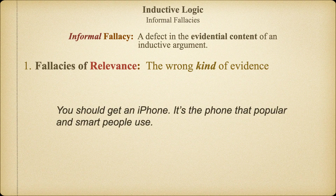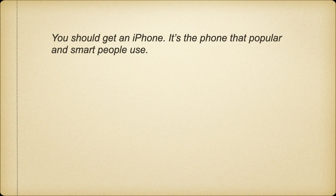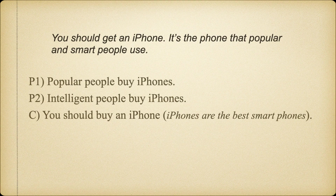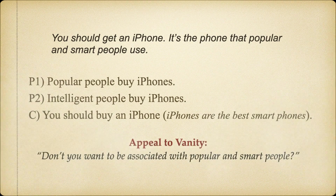For example: you should get an iPhone — it's the phone that popular and smart people use. We can clarify this argument by putting it into standard form, and when we do that we see there are two premises and one conclusion. The conclusion is that one should buy an iPhone, presumably because they're better than other kinds of smartphones. But look at the evidence supposed to support this conclusion: the premises tell us that popular and smart people buy iPhones. This argument isn't using reason to convince me — it's appealing to my emotions. There are many factors that should inform the choice of phone: functionality, what you're going to use it for, cost, etc. But my desire to be seen as popular or smart is not relevant to which phone is best for me.